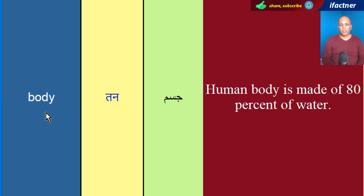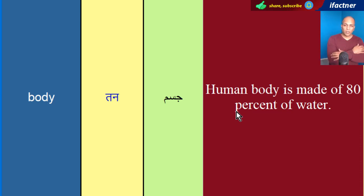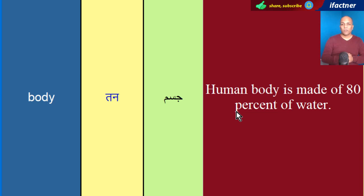Yahaan pe jih humayi paas example sentence hai: 'Human body is made of eighty percent of water.' Kya insani jisem mein assi percent paani hota hai, ya insani jisem assi percent paani se bhara hua hai.